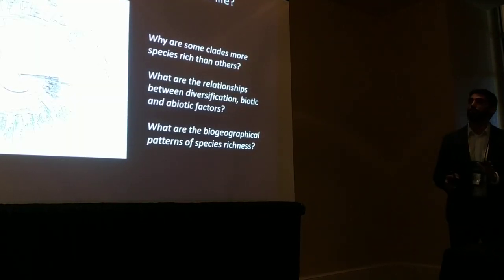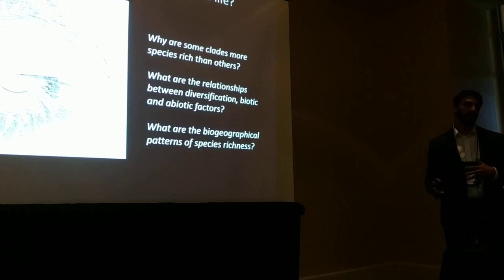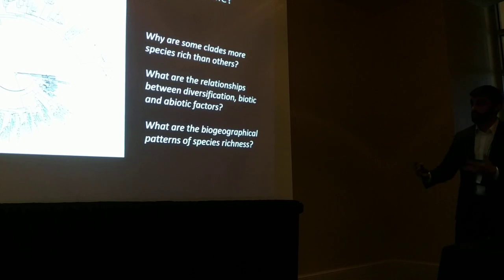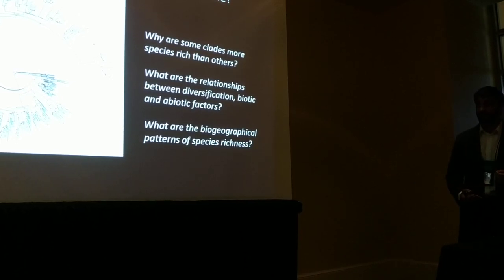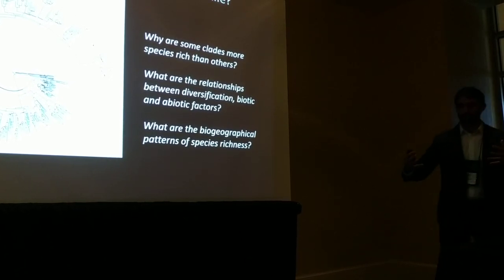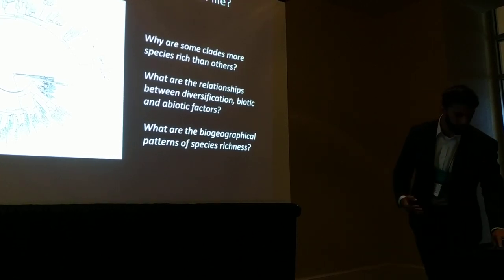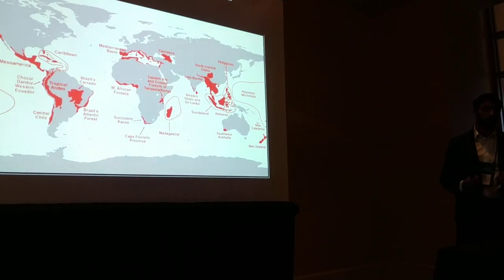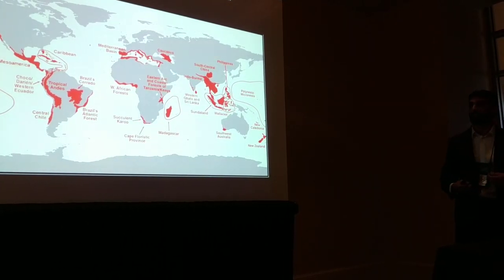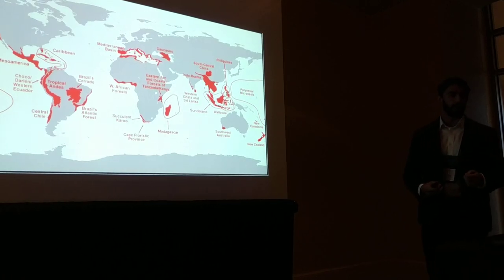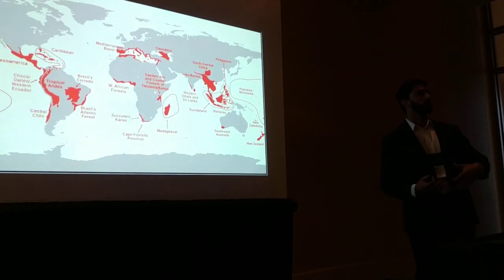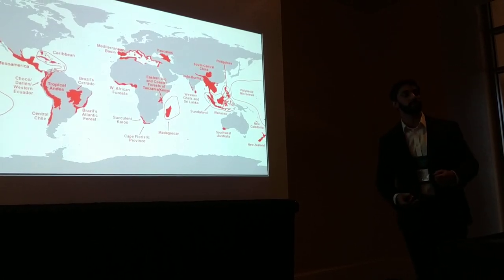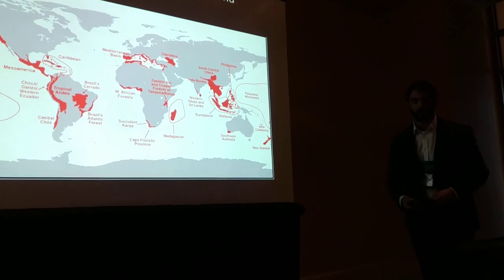A major goal of biology is to determine what is driving the diversification of life. Why are some clades more species-rich than others? What are the relationships between diversification and biotic and abiotic factors? What are the biogeographical patterns of species richness—where are most species found? It's been known for quite some time that particular regions of the world harbor a disproportionate number of species. Determining if these areas are museums, having accumulated lineages over a long period of time, or cradles, having accumulated lineages due to recent rapid radiations, has been a topic of debate.